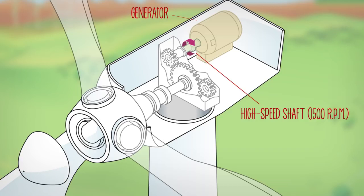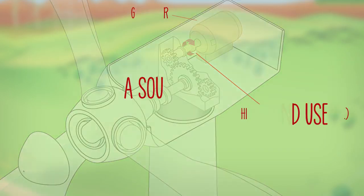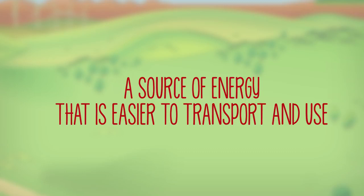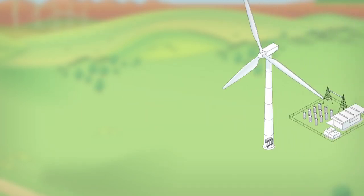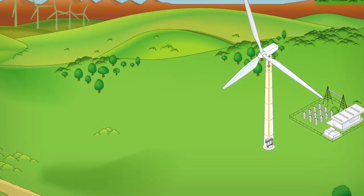The generator converts the kinetic energy into electricity, a source of energy that is easier to transport and use. The electricity produced in the generator as direct current is conducted through the interior of the tower to the base.